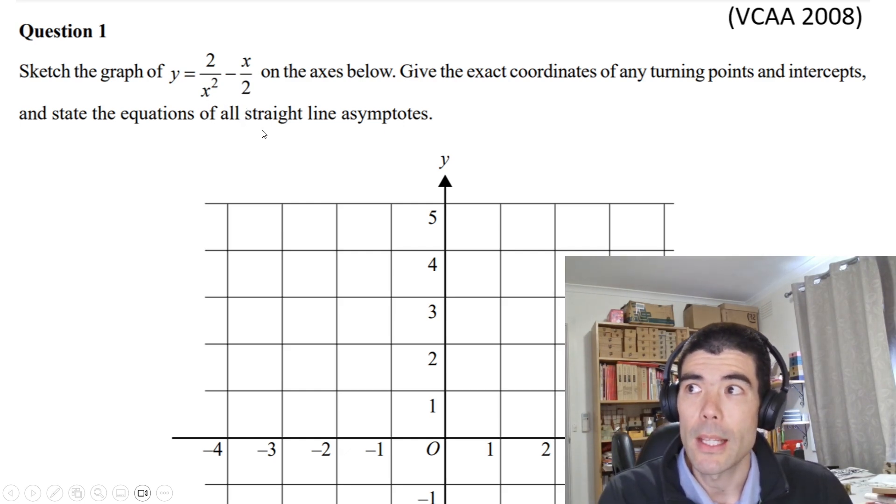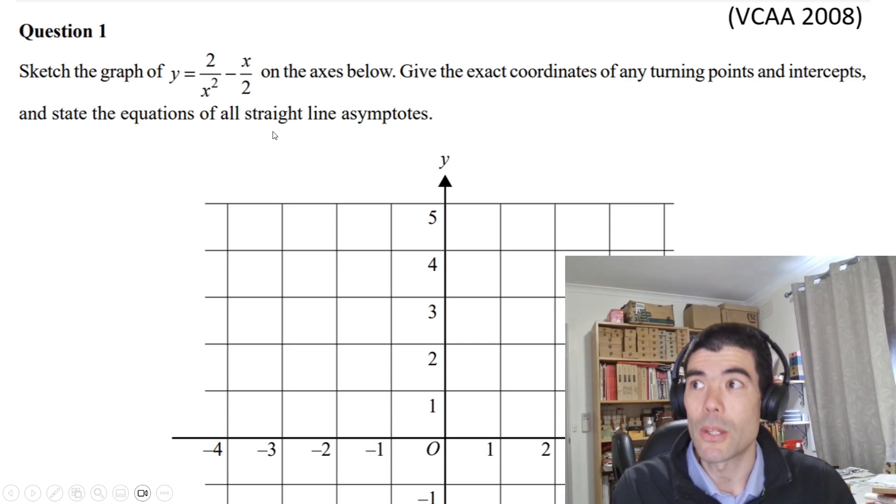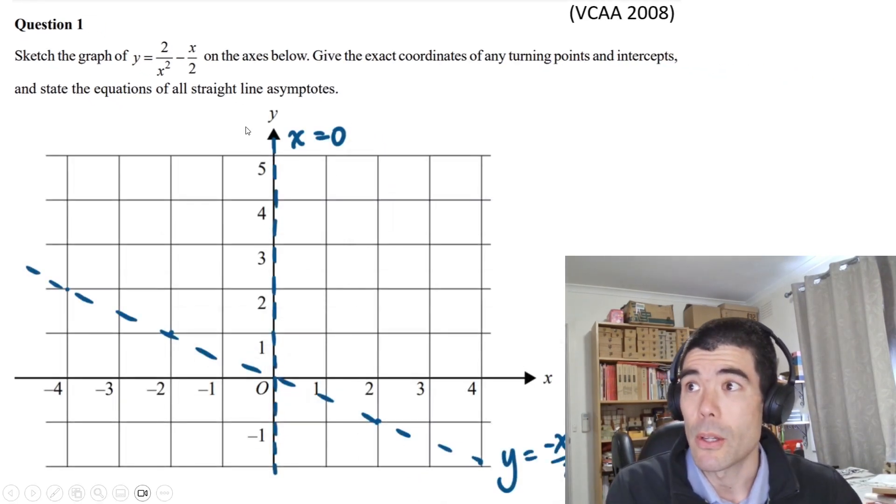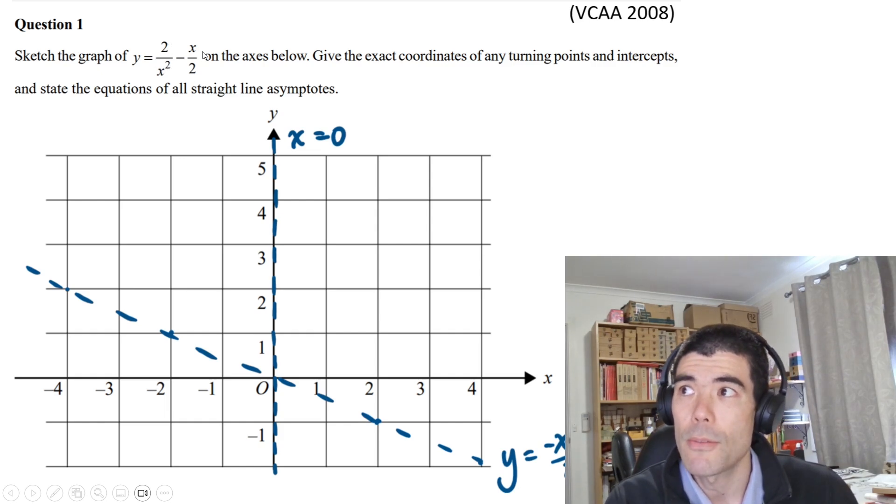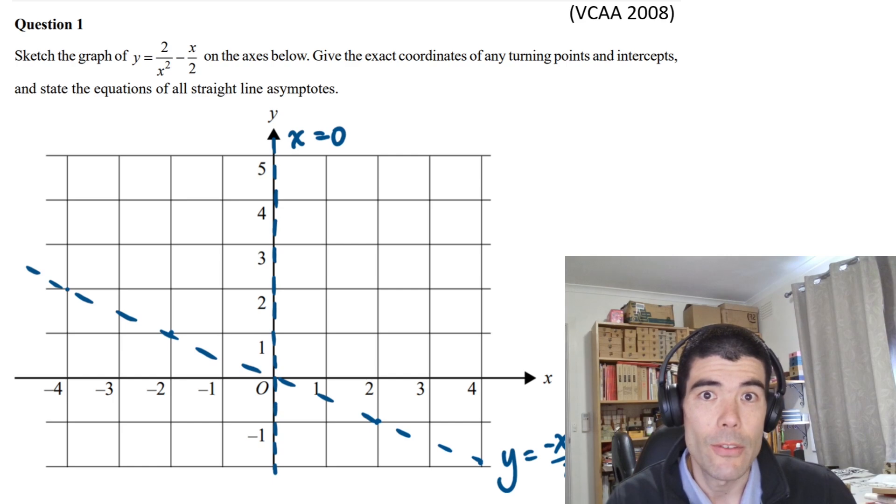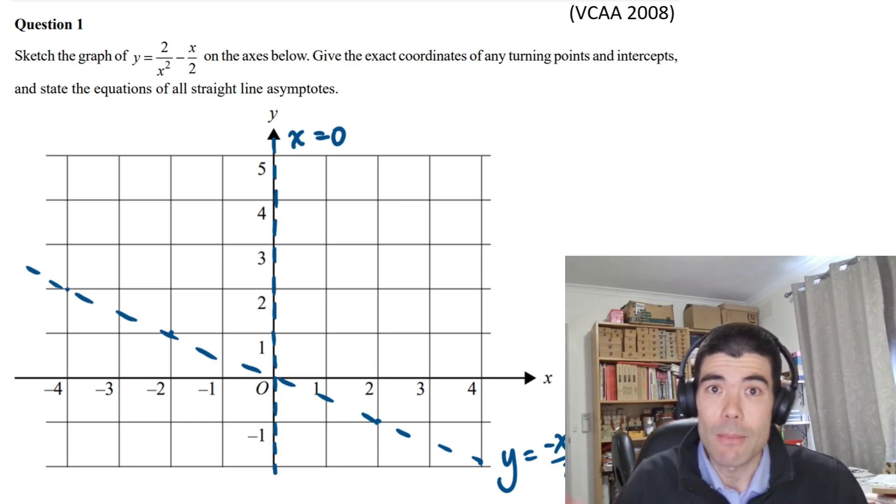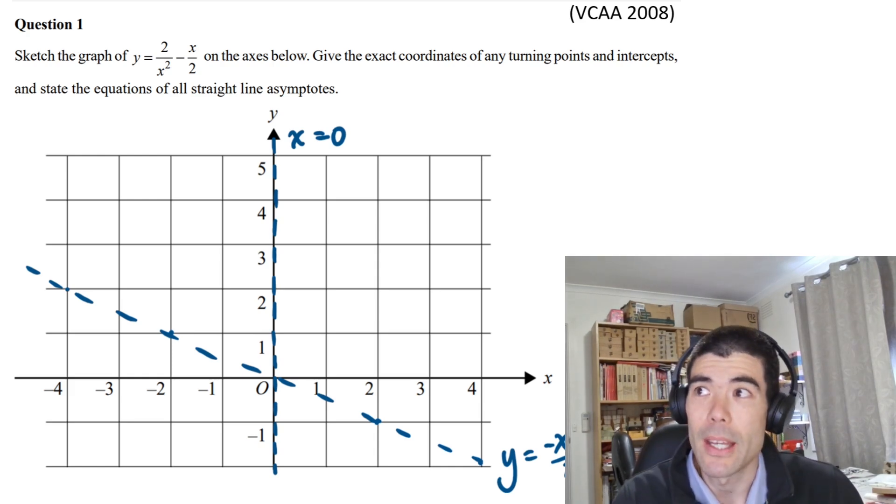The equation is 2/x² - x/2. The first thing we want to do is identify the asymptotes and sketch them in. When x is zero, you're going to have an asymptote because this term will be undefined. So vertical asymptote on the y-axis when x equals zero. As x approaches infinity, this term approaches zero, and we're just left with negative x/2. So that's our non-vertical asymptote, straight line asymptote at y = -x/2. Definitely sketch those in.